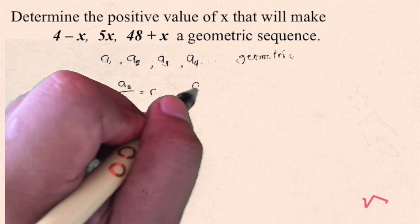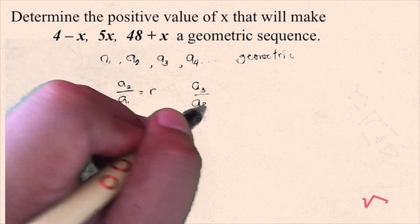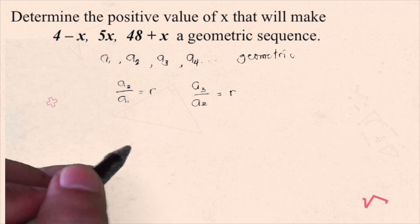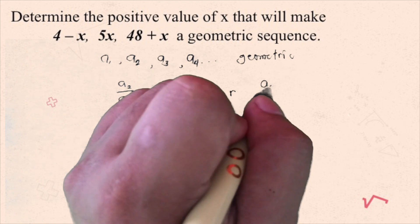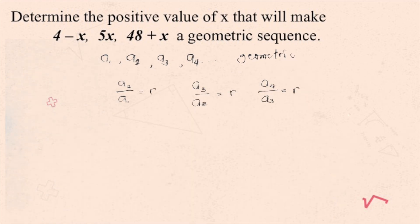Same goes also with a sub 3 divided by a sub 2, we will still have the common ratio. Same also with a sub 4 divided by a sub 3, you will have the common ratio.